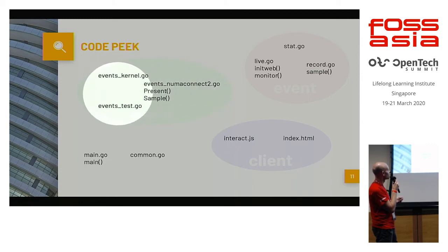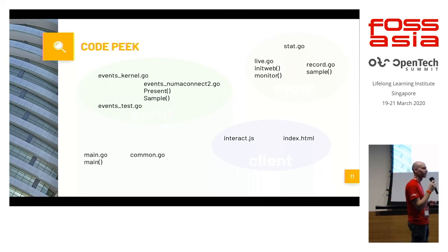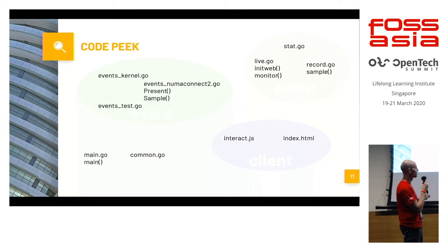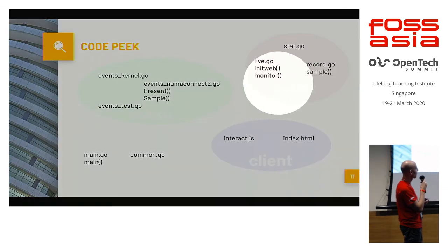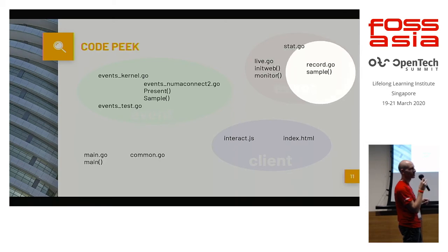There's an events test file that lets me run 'go test' and automatically verify different functions, making it easier to address bugs. I also have a live web version and a sampling version I can run offline — so I can save a trace that I can load later.